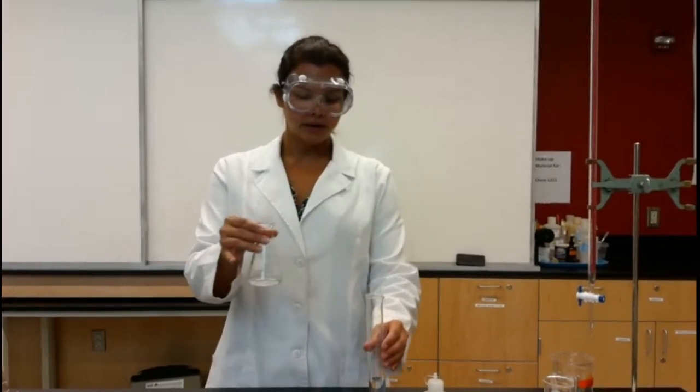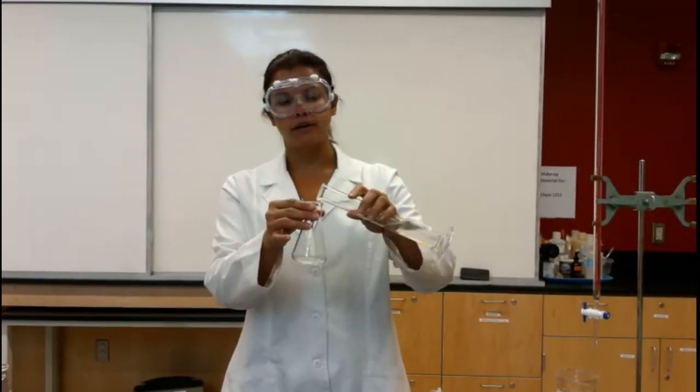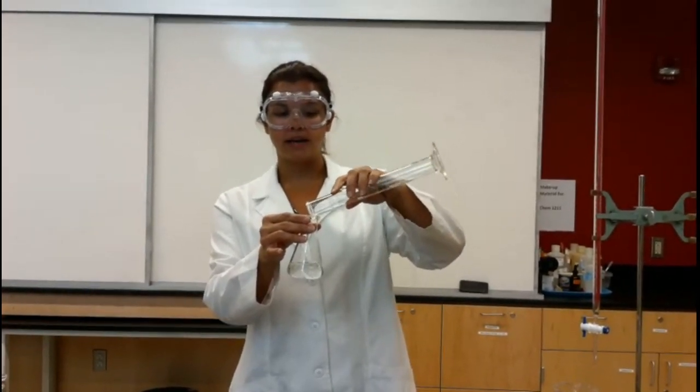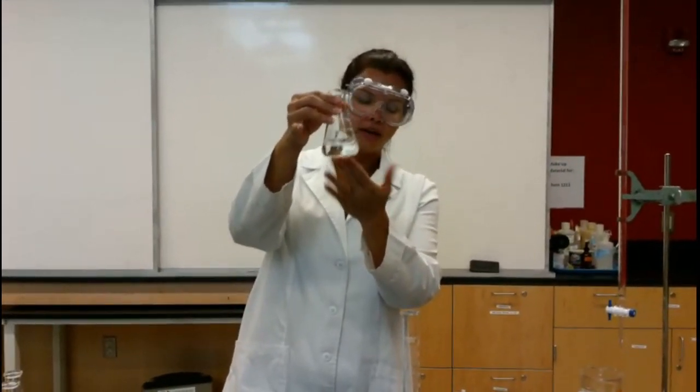Now that we have our sample in our Erlenmeyer flask, we're going to add approximately 50 milliliters of water. You can measure it out in a 100 milliliter graduated cylinder. The water is not quantitative, which means that its actual volume does not influence the end result of the titration. It just truly allows us to see that there's solution in our flask.